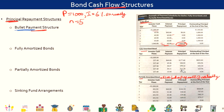In an amortizing bond, along with the interest, part of the principal is also retired each year. This is how it differs from a bullet payment structure. Do you think amortizing bonds have more or less credit risk than a bullet payment structured bond? The answer is lower credit risk, because part of the principal is getting repaid to the investor every year. As the principal gets repaid year on year, the amount of credit risk that the investor has to bear keeps reducing year on year.